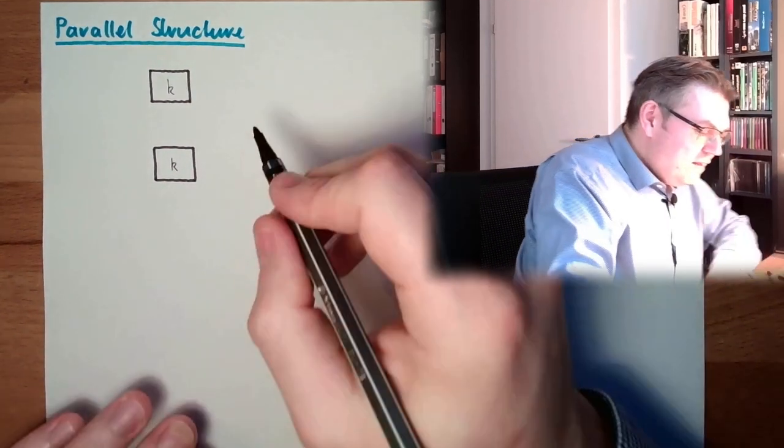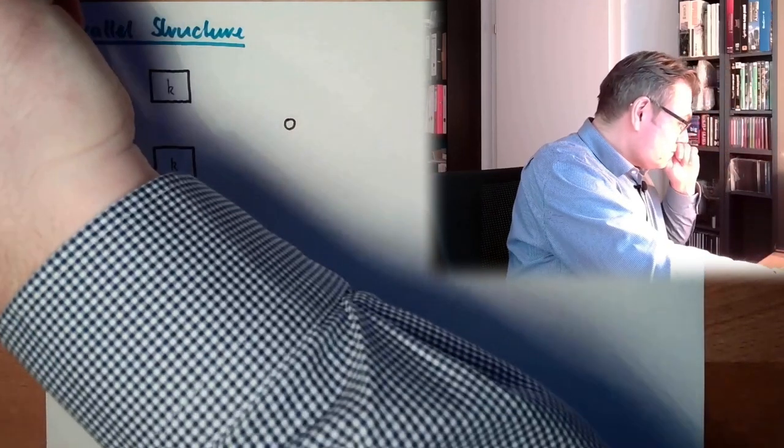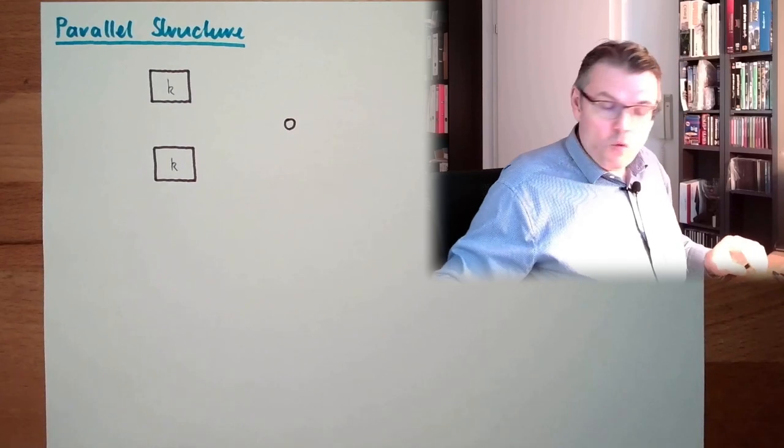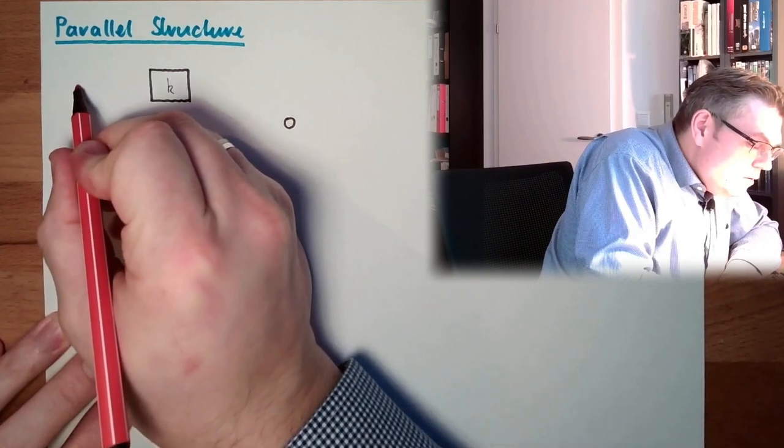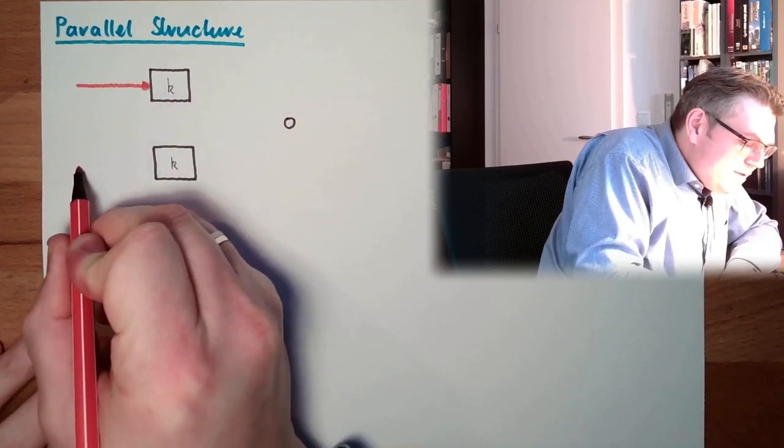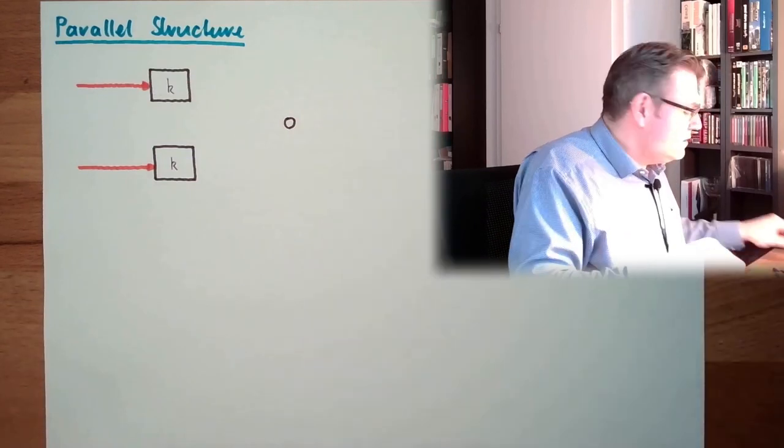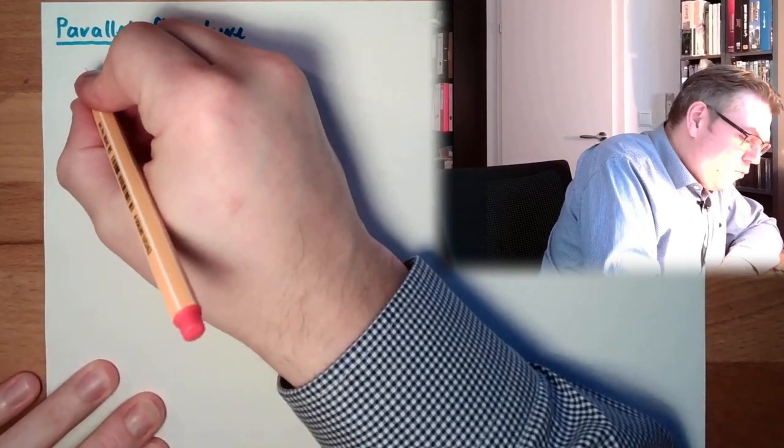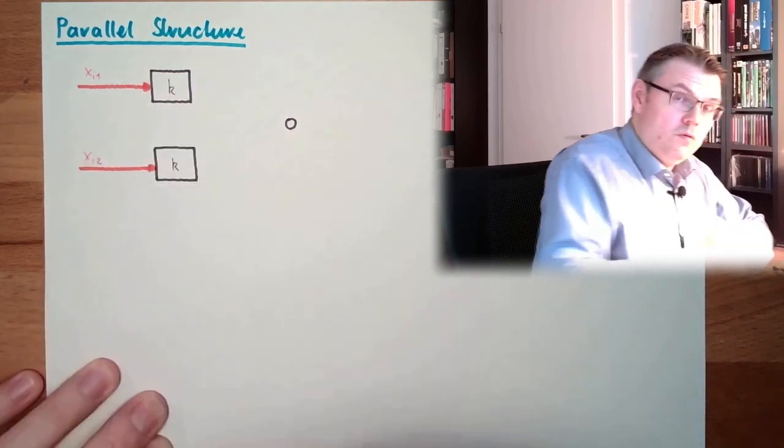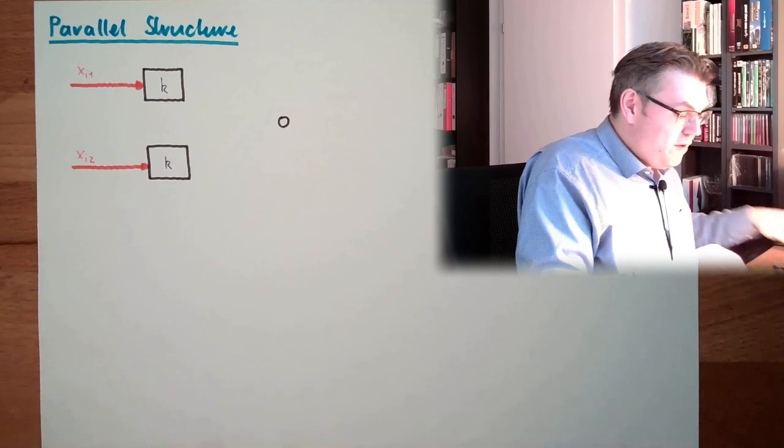And then, in the end, we have some mixing point. We have here one input, and we have a second input. This time we are measuring two different things. We're measuring an XI1 and we're measuring an XI2. Both have an output here.